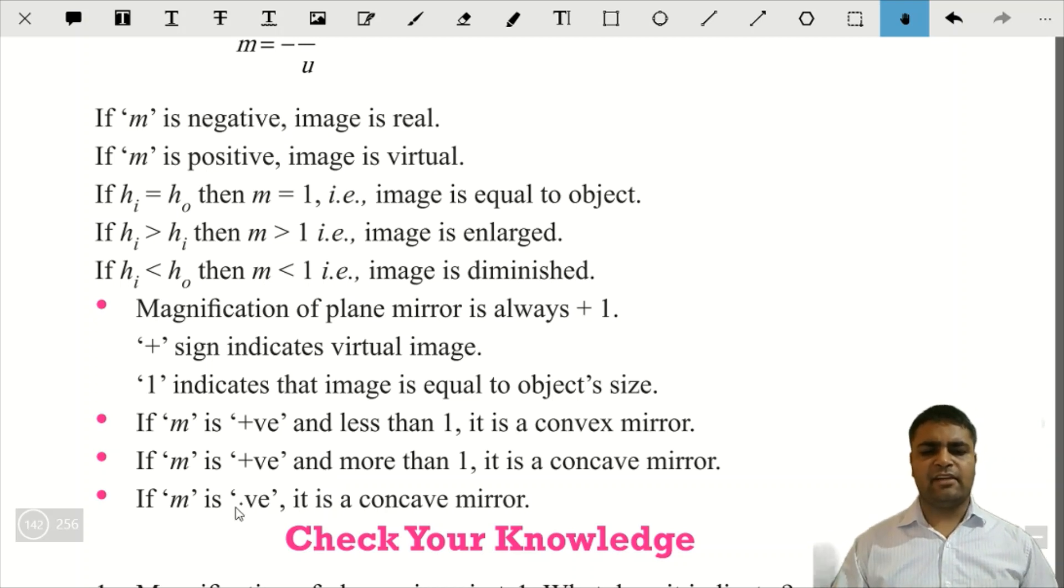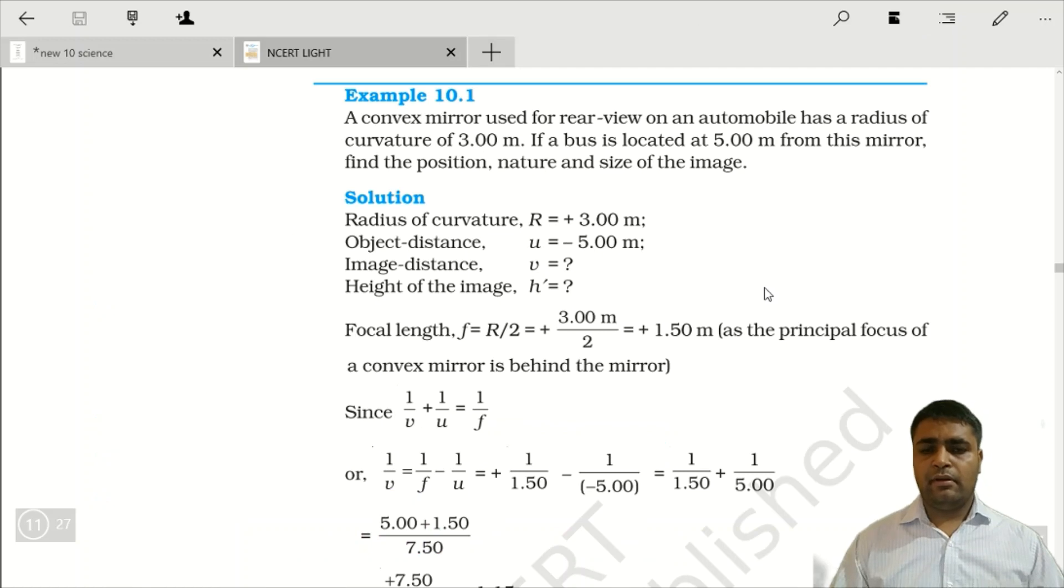If m is negative, toh agar woh negative hai, toh woh humesha woh image kaise hogi? Real hogi. Or real image kiske case mein banti hai? Concave mirror ki case mein banti hai. Yeh humne diagram se, wahan par jitne bhi humne cases padhe the, unmein dekha tha.